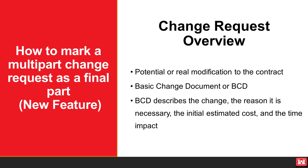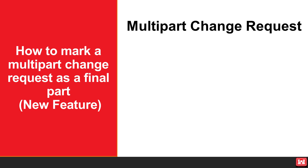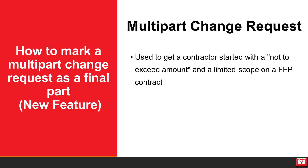The BCD describes the change, the reason it is necessary, the initial estimated cost, and the time impact. The second part is creating a formal modification that may become part of the contract. A multi-part modification is used to get a contractor started with a not-to-exceed amount and a limited scope on an FFP contract, since a contractor cannot expend funds on anything they did not bid.